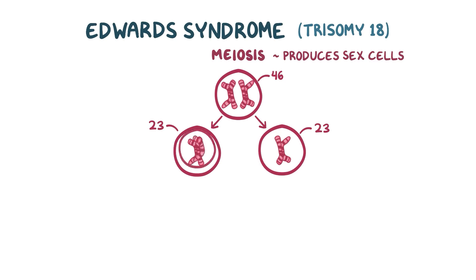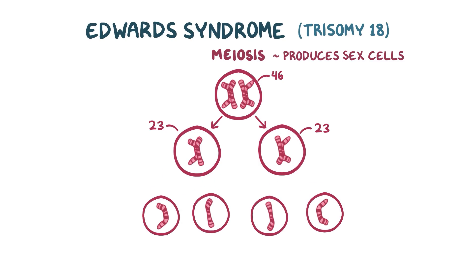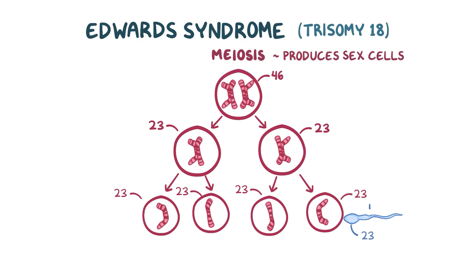Now the two copies of the chromosome get pulled apart, and the cell splits again, which means four cells, each still with 23 chromosomes. Now these are ready to pair up with a sperm cell from dad that has 23 chromosomes as well, totaling up to our 46 chromosomes. And voila, nine months down the road, you've got yourself a baby.